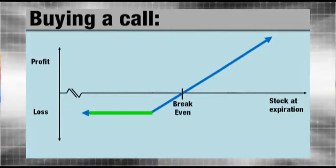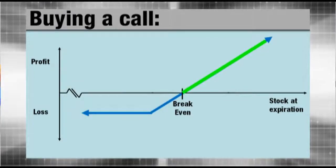Say the call I was thinking of buying was the October 50 call. Maybe that call cost me $3. That means the most I could lose is $3 and I could have unlimited profit potential. But let's say I don't really need unlimited profit potential because I think the stock is just going to rise to a certain point, and I'd like to minimize my potential risk and risk maybe less than $3 a share.